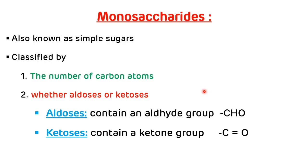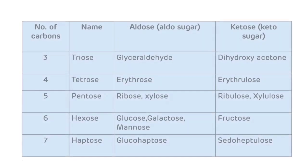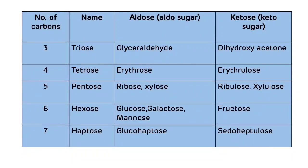We will now see various examples of monosaccharides based on this classification. If there are three carbon units, they are known as triose. An example of aldo-triose is glyceraldehyde; an example of ketose triose is dihydroxyacetone. If there are four carbon units, they are known as tetrose. An example of aldo-tetrose is erythrose; an example of ketose tetrose is erythrulose.